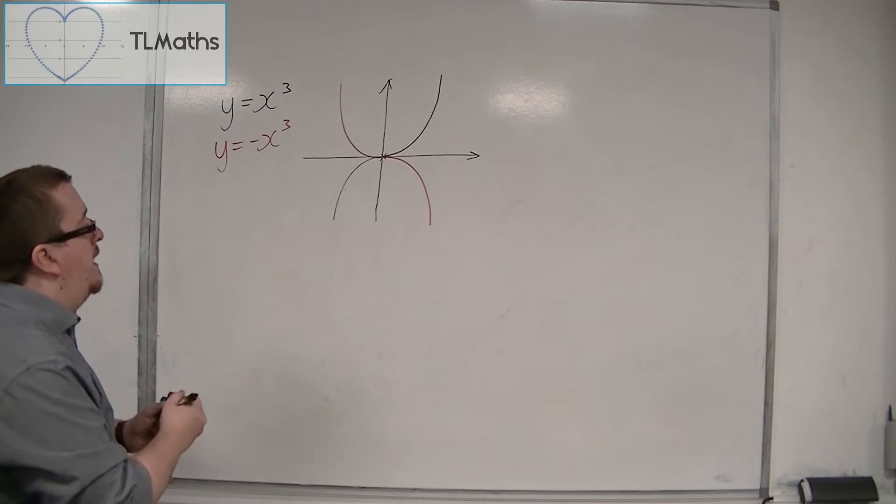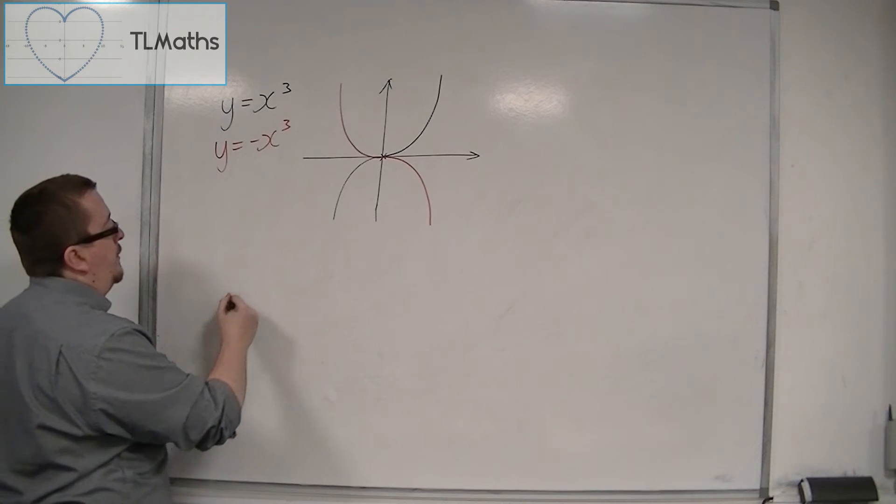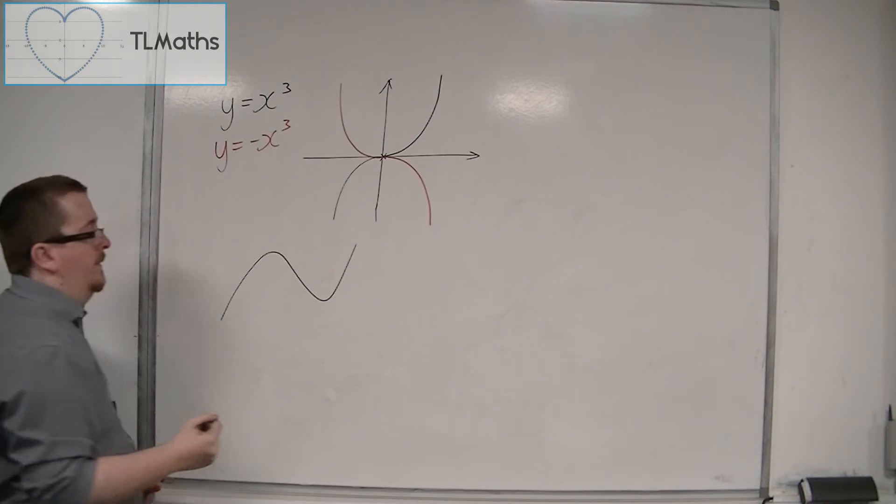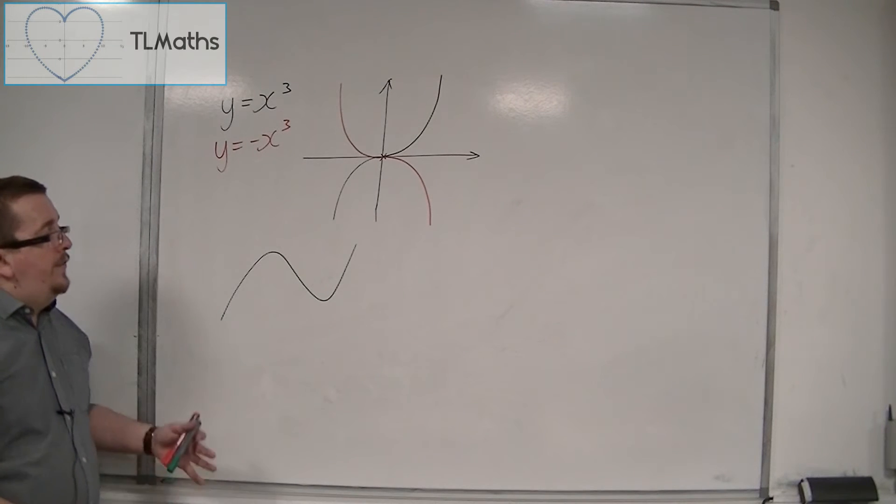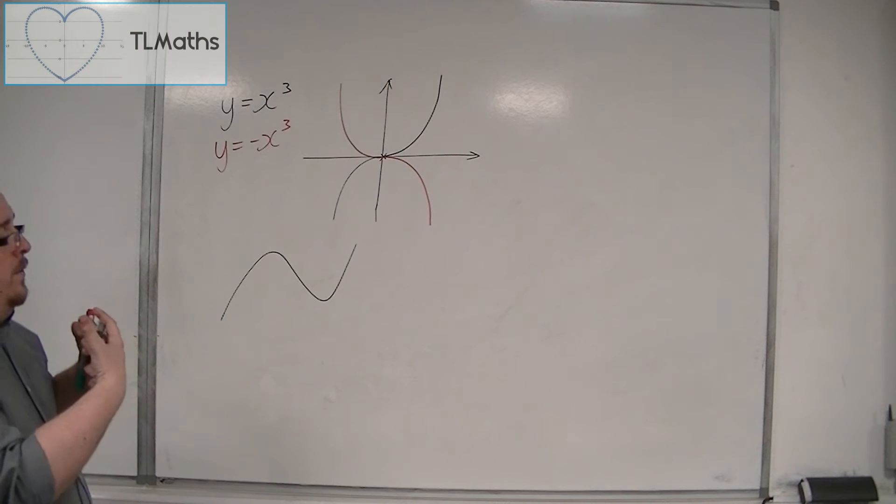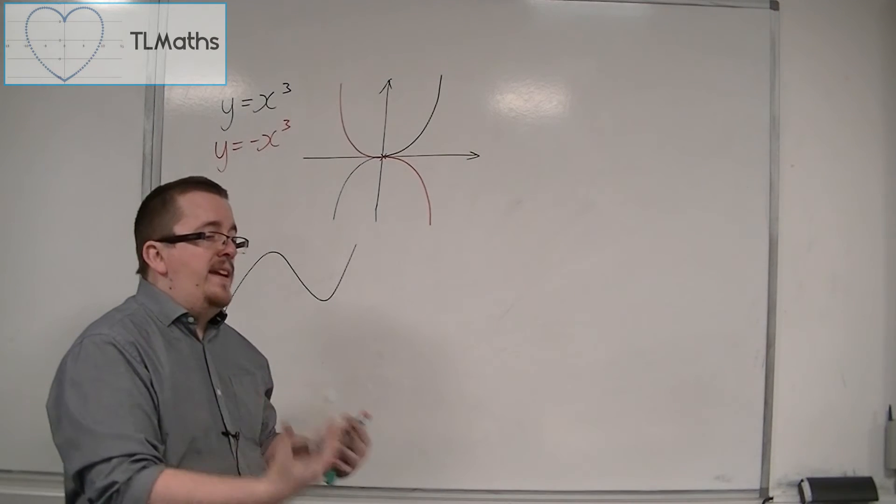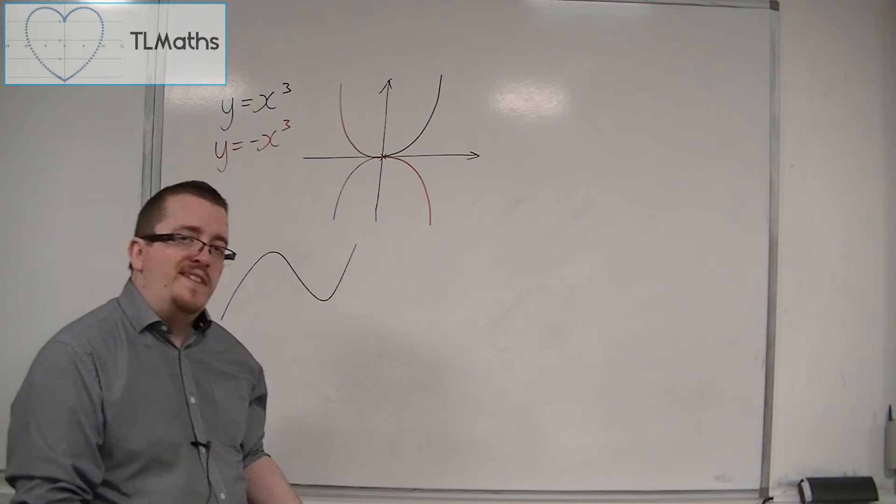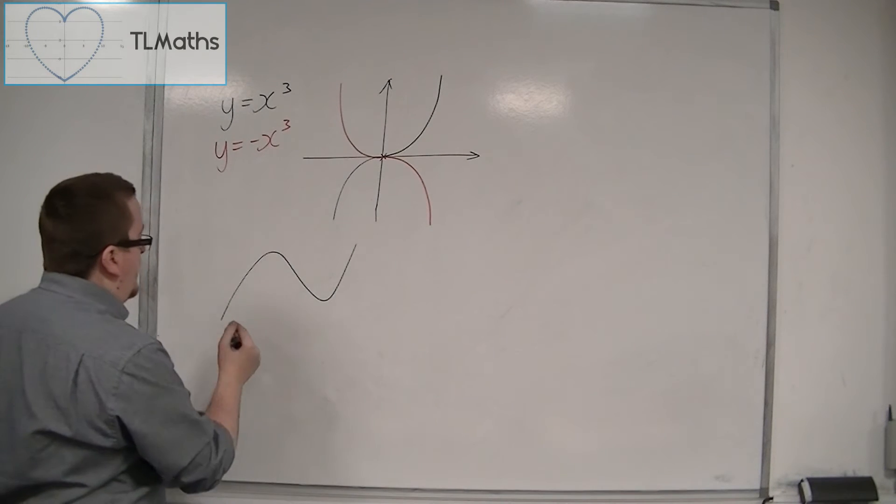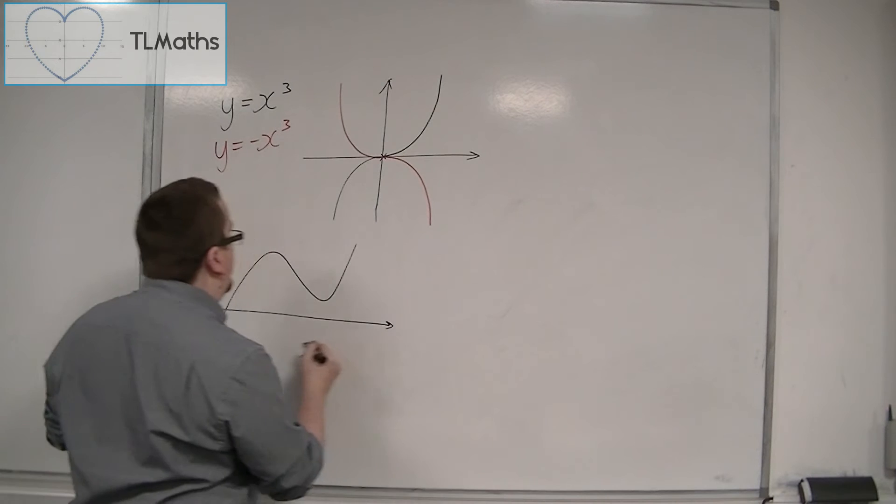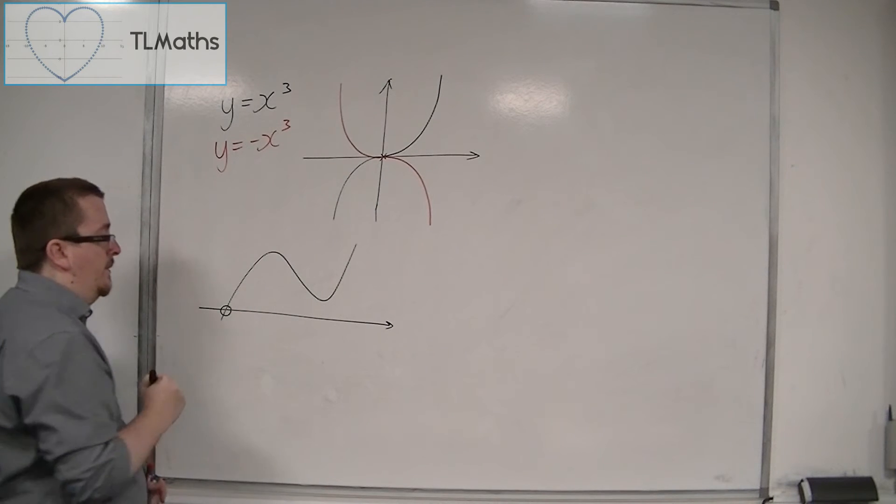But what you can have is a shape that looks like this. This is also the shape of a cubic. And what we find is that we're also going to be thinking about, well, how many solutions does it have? How many times does it cross the x-axis? So potentially, it might only cross the x-axis at one point, like so.